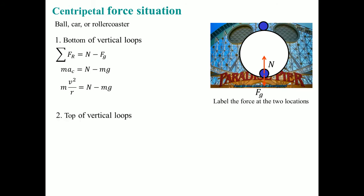Now we're going to look at it from the top. The force of gravity is pointing down, and since the object is on top, the normal force is going upwards. Here, the gravitational force is bigger. The reason is that gravity is what's keeping it in the circle. So F_G is larger and F_N is smaller. On top of the vertical loop, it's F_G minus N, with the same substitution.